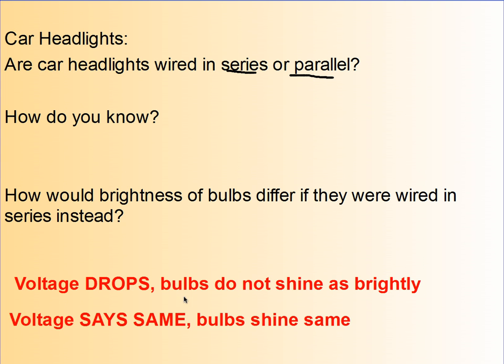Now when voltage drops, bulbs do not shine as brightly. When the voltage stays the same, then the shine is the same. So that's how you tell if voltage has changed by the brightness of the bulbs. Now you're going to do a lab where you're going to observe the brightness of the bulbs. When the brightness does not change, then the voltage is the same. When the brightness increases, the voltage increases. When the brightness decreases, then of course the voltage decreases.